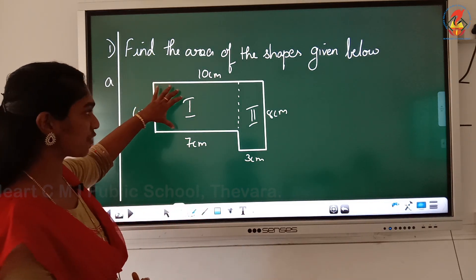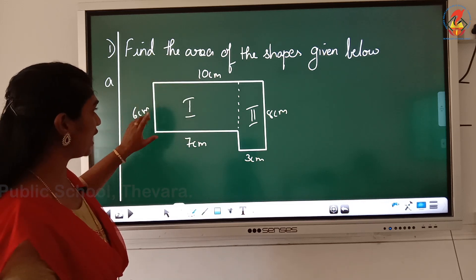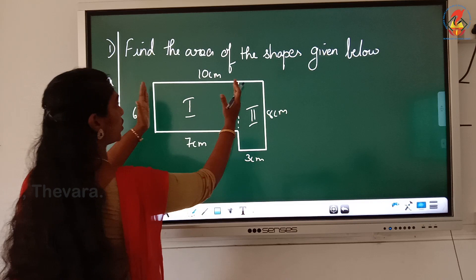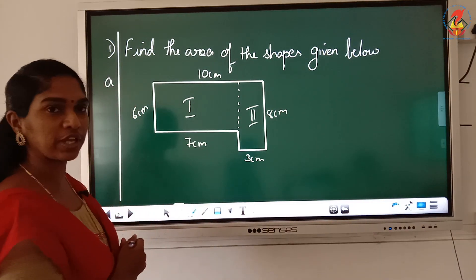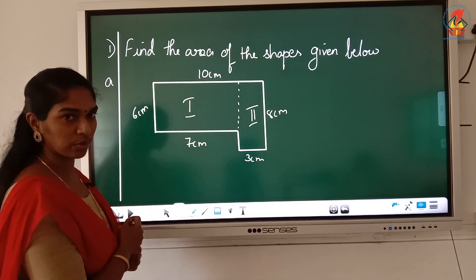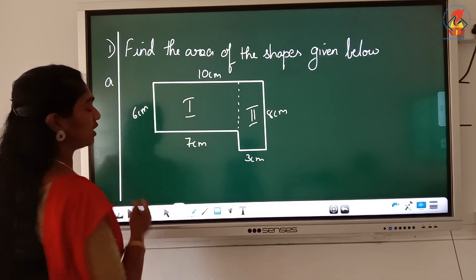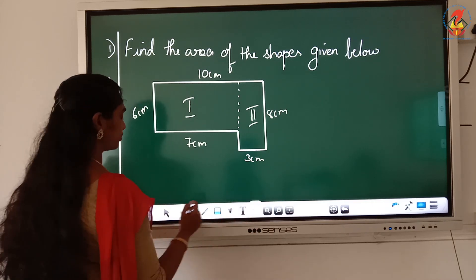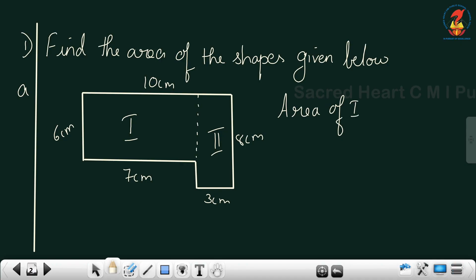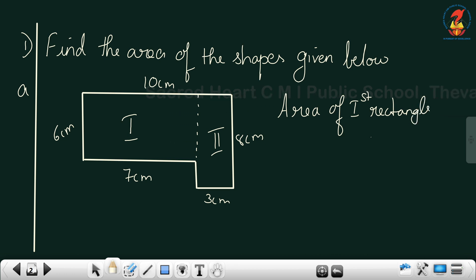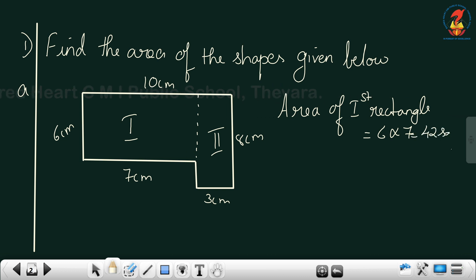So I have my first rectangle over here. Can you tell me what will be the length over here? It is only this much. So what is the length over here? It is 7 centimeter. And what is the breadth? It is 6 centimeter. So that is equal to 6 into 7, that is equal to 42 square centimeter.